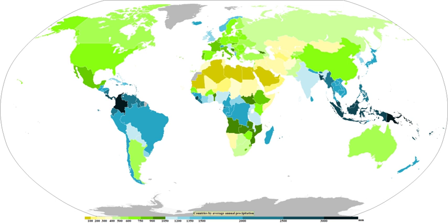Rain forests are characterized by high rainfall, with definitions setting minimum normal annual rainfall between 1,750 and 2,000 mm. A tropical savanna is a grassland biome located in semi-arid to semi-humid climate regions of subtropical and tropical latitudes, with rainfall between 750 and 1,270 mm a year. They are widespread on Africa and are also found in India, the northern parts of South America, Malaysia, and Australia. The humid subtropical climate zone is where winter rainfall is associated with large storms that the westerlies steer from west to east, with most summer rainfall occurring during thunderstorms and from occasional tropical cyclones.